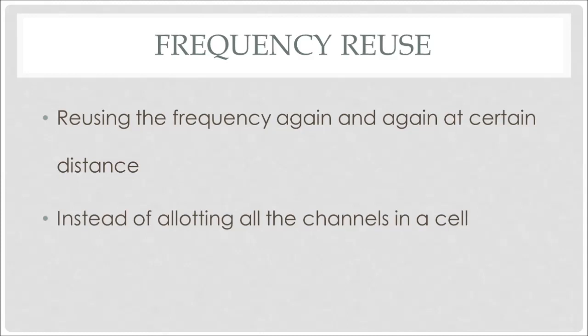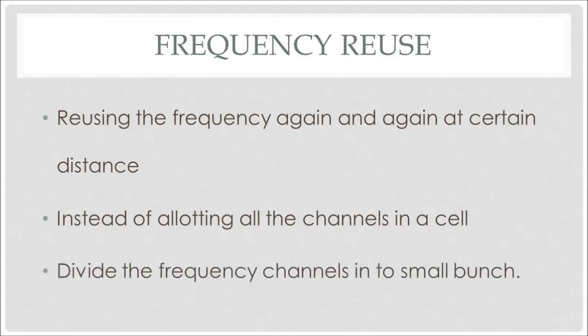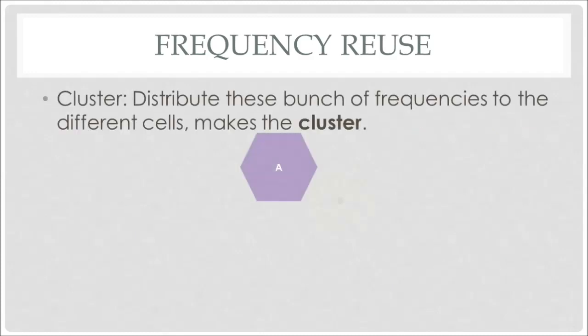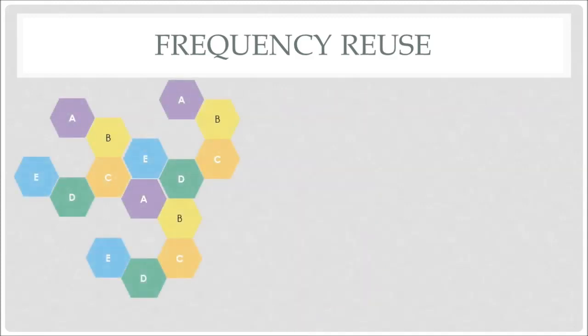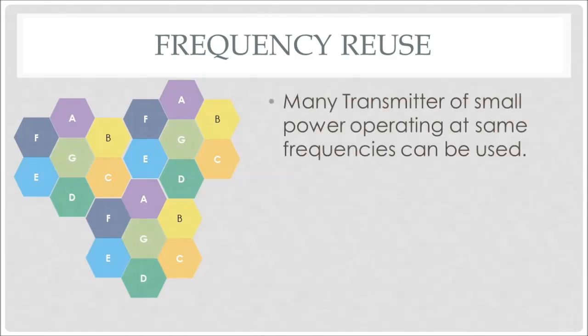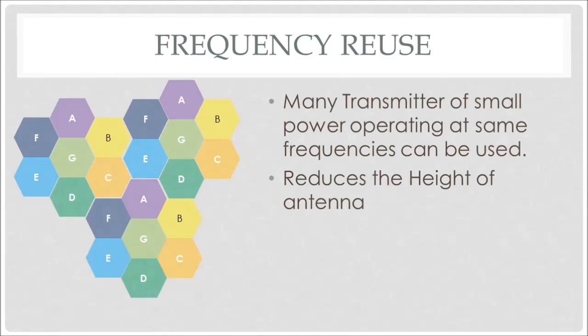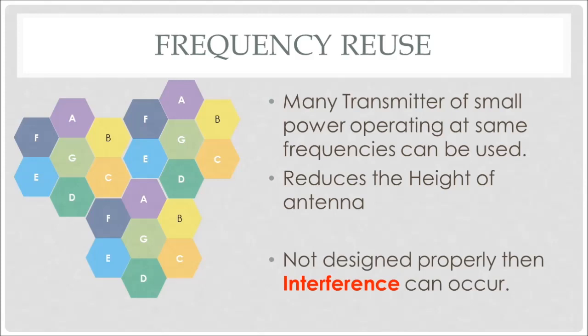The service provider has a set of frequencies to be used. Instead of allotting all channels in a single cell, they divide the frequency channels into small groups and distribute these groups to different cells, forming a cluster. Each alphabet here indicates a different set of frequencies, so the same frequencies are reused in different cells located at a distance. Using this concept, the antenna size is reduced with less power required, as the area to be covered is smaller, and more users can use the channel. However, if channel allocation is not done properly, it will result in interference, which may occur due to frequencies used in adjacent cells.